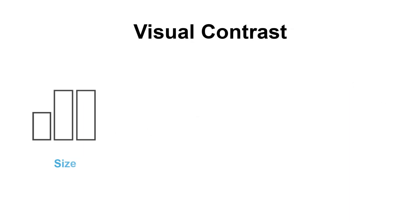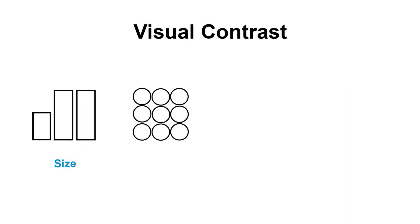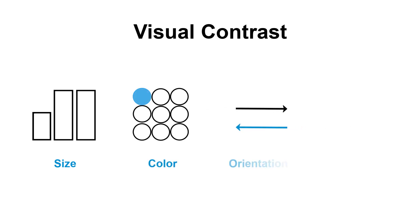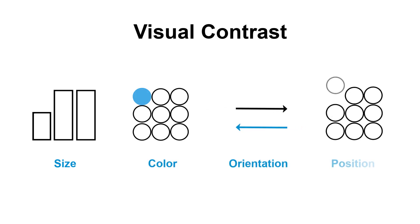Visual contrast is obtained by showing difference in size, shape, color, width, orientation, length, and position. The objective is to preload important facts into the user's mind by using these visual principles.